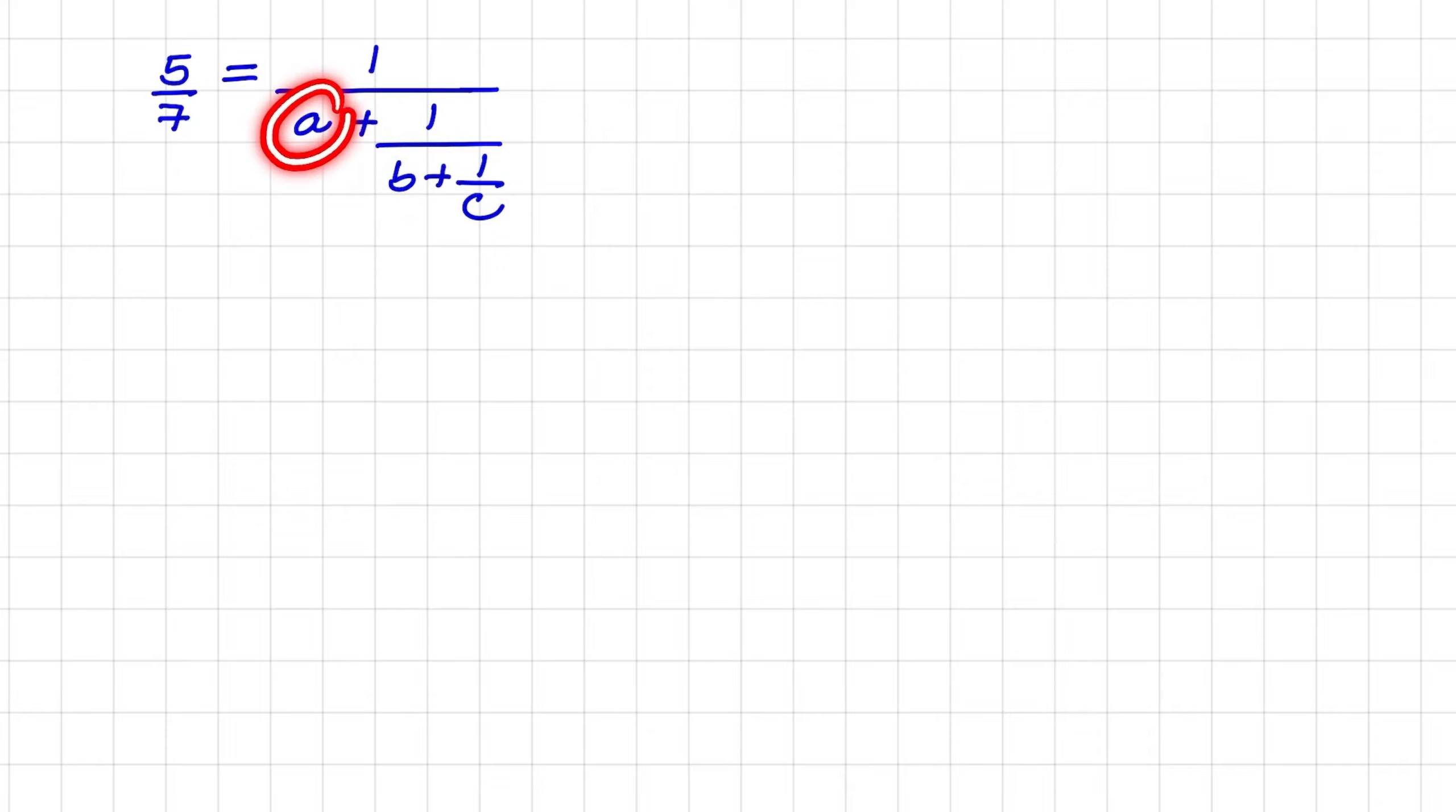So in order to find the values of these variables, we want to rewrite the fraction on the left, which is 5 over 7, to look like this compound fraction.